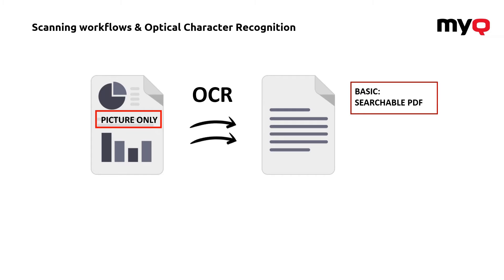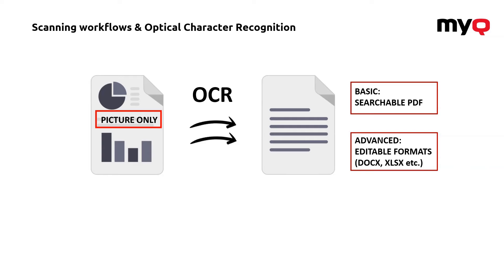There could be two basic outputs. The basic one is just a searchable PDF where you can use the search feature and find the words you want and potentially copy them to your document. The second, more advanced one not only gives you a searchable version but also an editable format like Microsoft Word, Excel, and others — so it converts the file into a format where you can start working on those words, text, pictures, and everything which was in the original document.